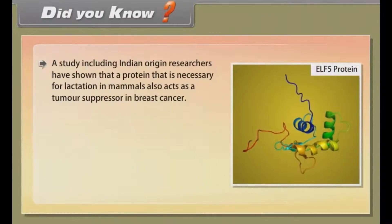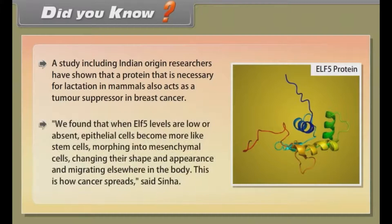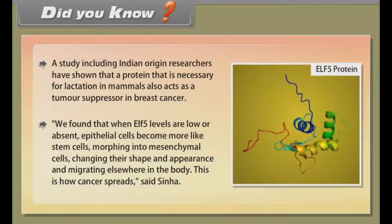Did you know? A study including Indian origin researchers has shown that a protein necessary for lactation in mammals also acts as a tumor suppressor in breast cancer. When ELF5 levels are low or absent, epithelial cells become more like stem cells, morphing into mesenchymal cells, changing their shape and appearance, and migrating elsewhere in the body — this is how cancer spreads, said Sinha.